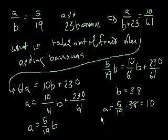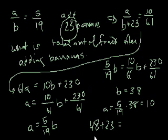So initially, we started off with 48 pieces of fruit. And then we're going to add 23 more pieces of fruit, right? And 43 plus 28, that's what? 71 pieces of fruit.